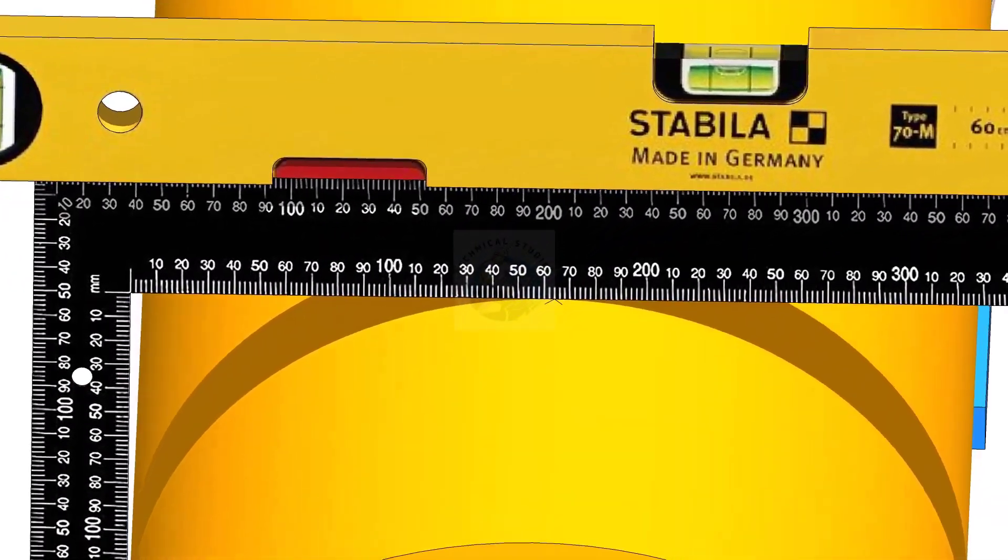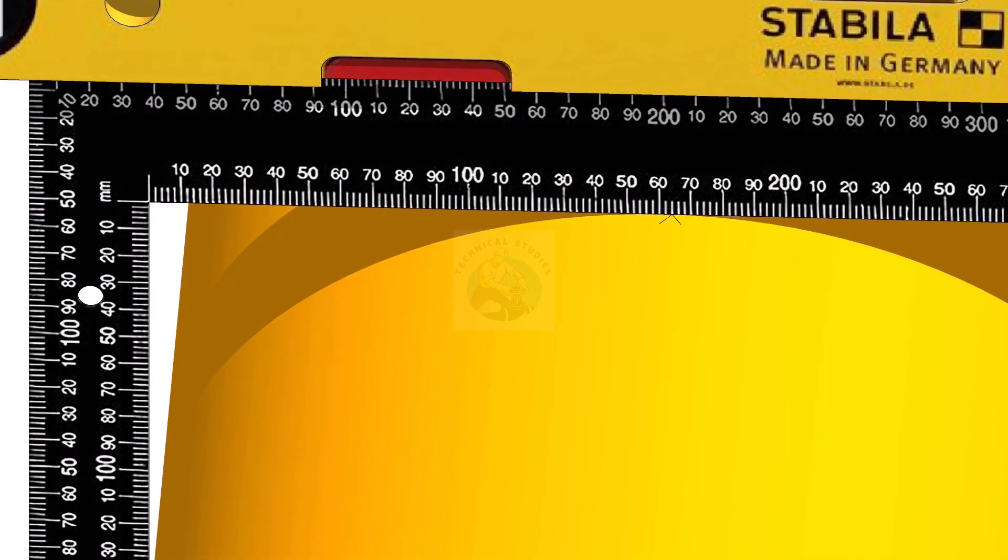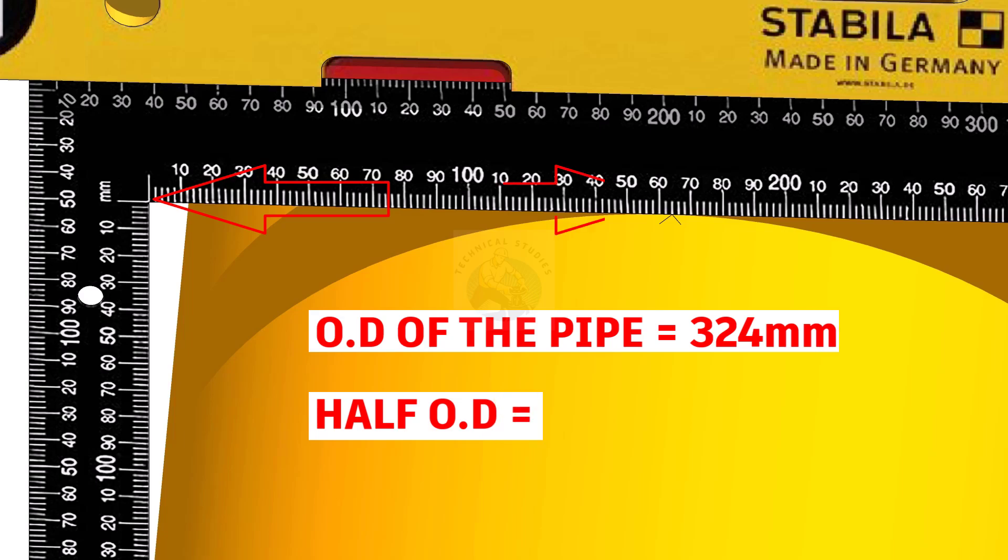Now, mark half diameter of the pipe on the top of the pipe as shown. Since the OD of this pipe is 324 millimeters, I marked 162 millimeters here.